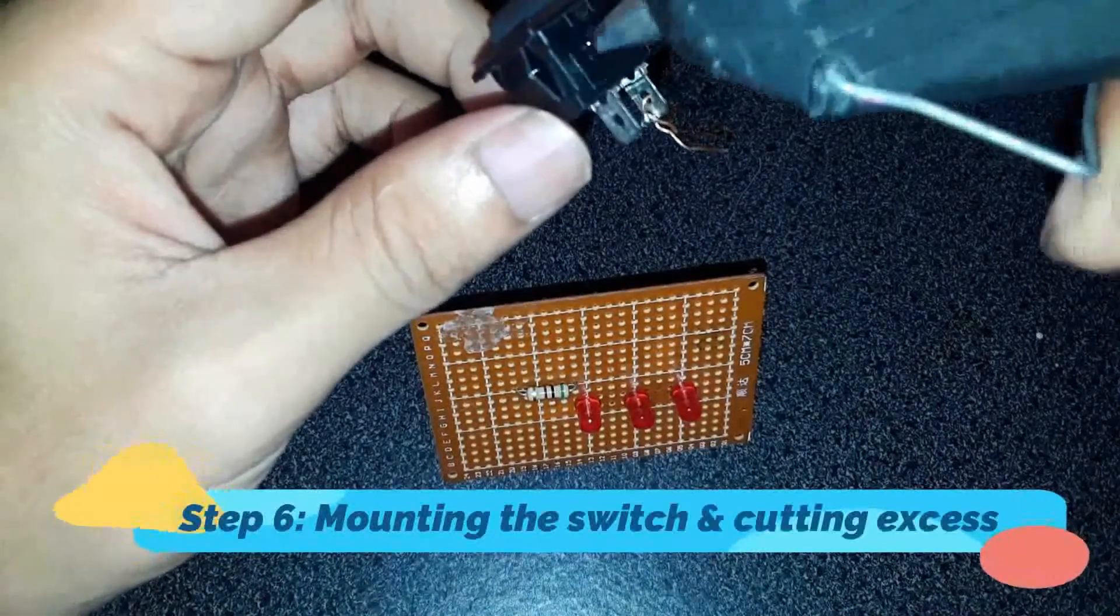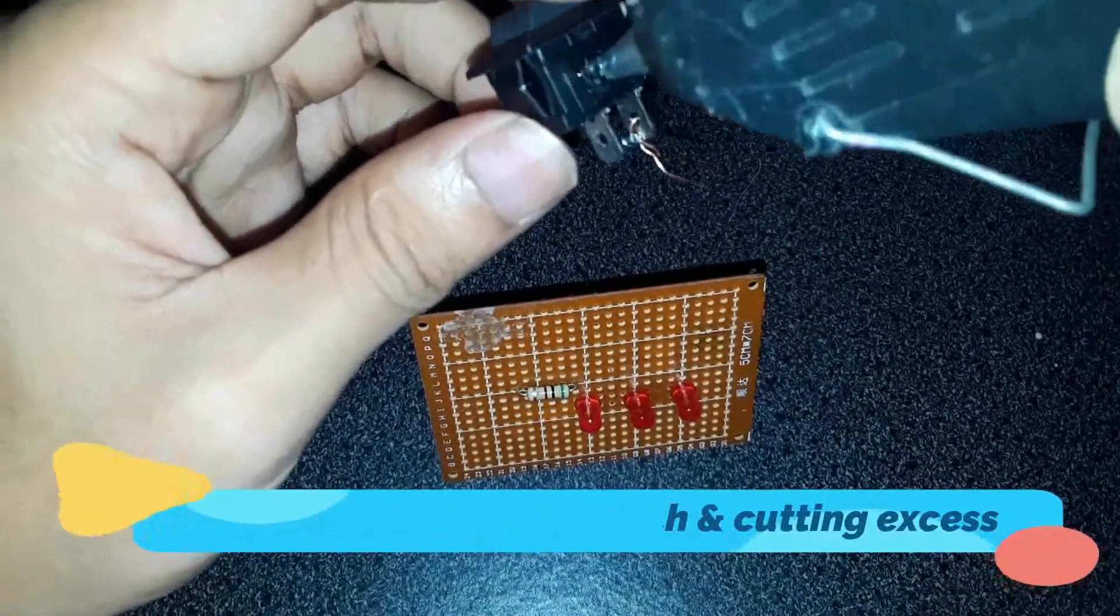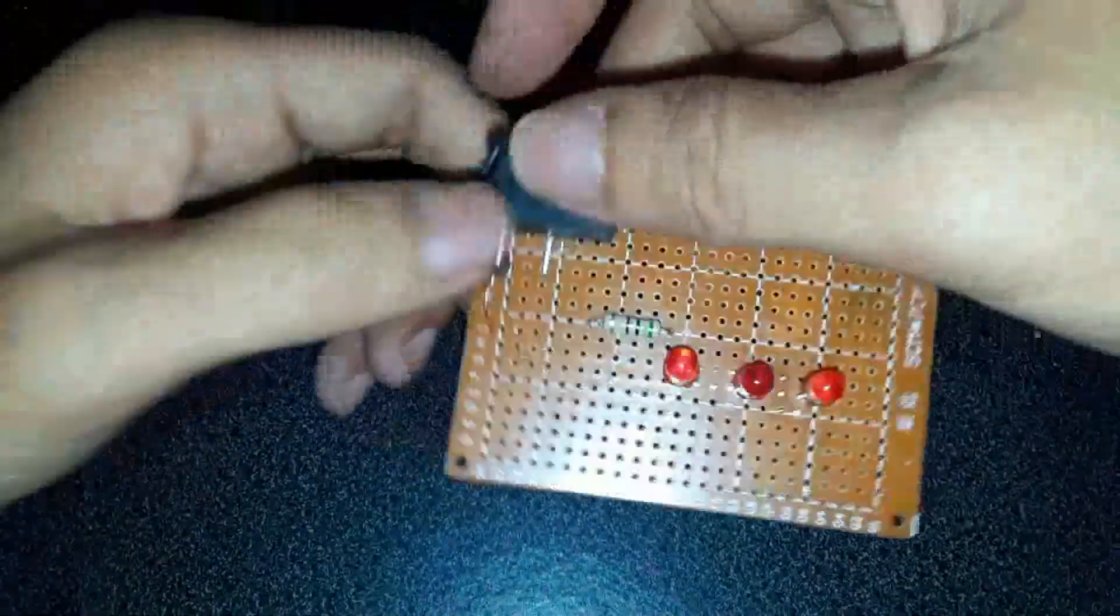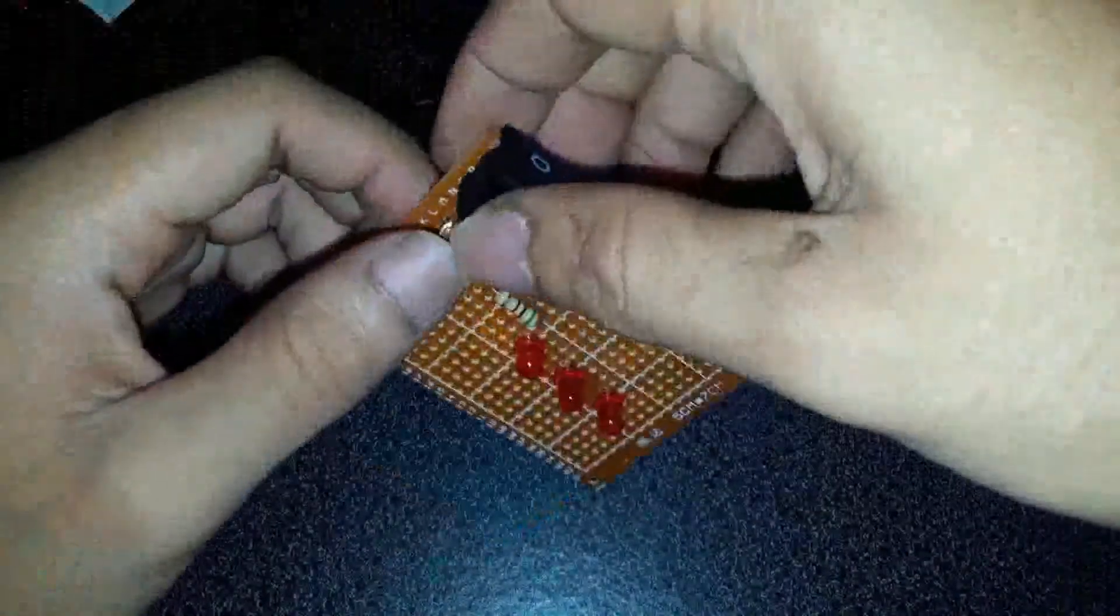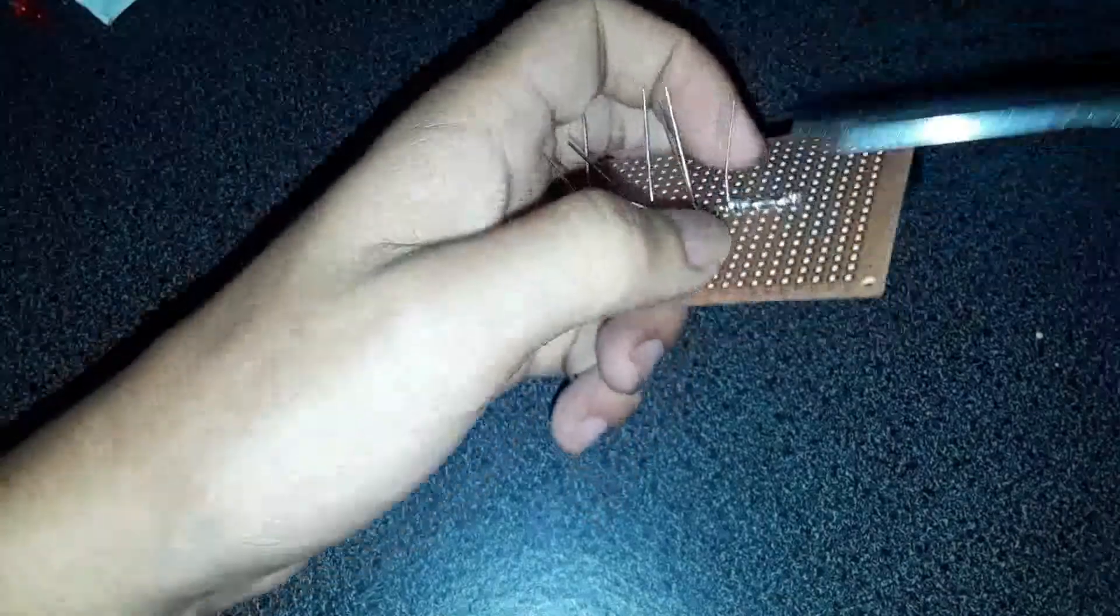Step 6: Mounting the switch and cutting excess. In this step, we will now mount the switch in the PCB and we will cut unnecessary wires to finish the design in the dotted PCB.